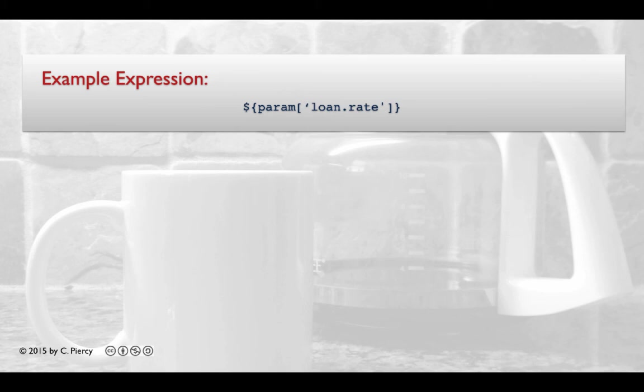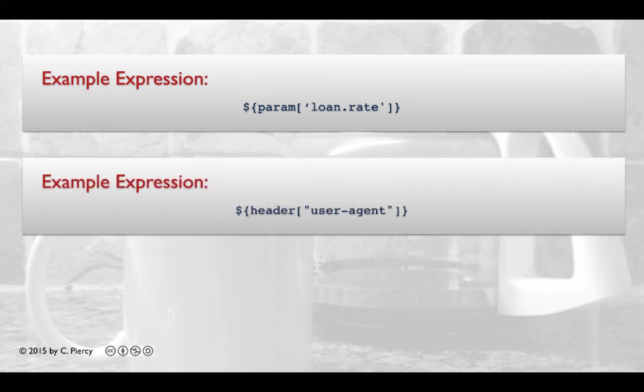So we can use param loan.rate. If the request parameter is a loan object, you're accessing its rate property. Here's an example where we're using the header implicit object, which will hold all of the items that are sent along with the request in the header of the HTTP request.